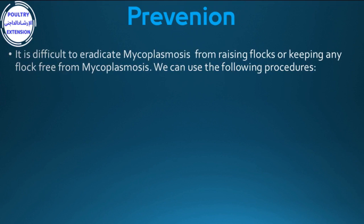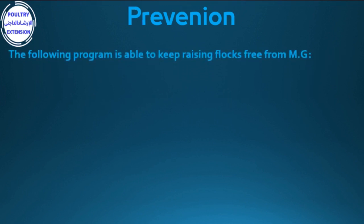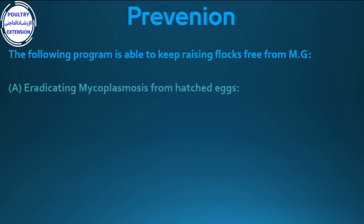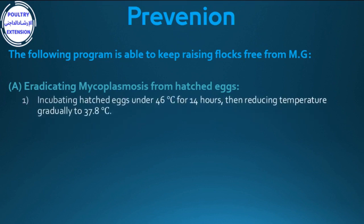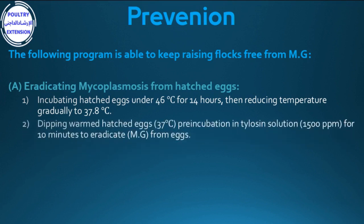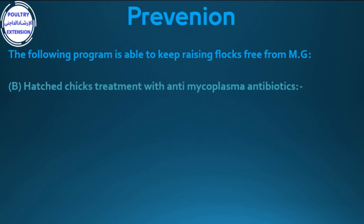Prevention: it is difficult to eradicate mycoplasmosis from rearing flocks. The following program is able to keep rearing flocks free from MG. A) Eradicating mycoplasmosis from hatched eggs: (1) Incubating hatched eggs at 46°C for 14 hours, then reducing temperature gradually to 37.8°C. (2) Dipping warmed hatched eggs, pre-incubation at 37°C, in a tylosin solution of 1.5 g/L (1500 ppm) for 10 minutes to eradicate MG from eggs.